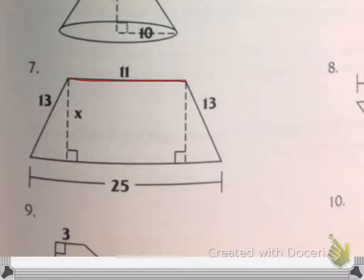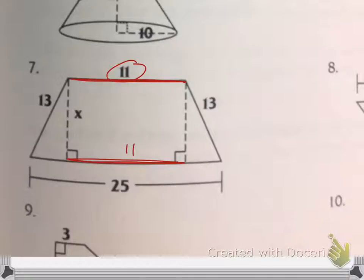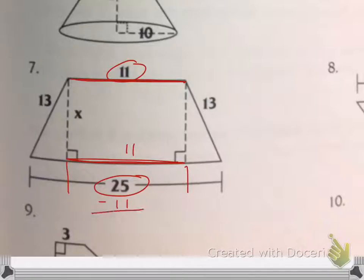But if we know this distance is 11, we know this distance is 11, and we know this overall distance is 25. So 25 take off the 11 makes 14, which means that's 7 and that's 7.